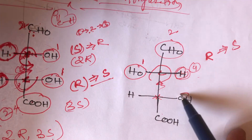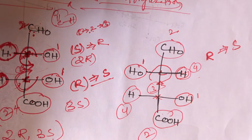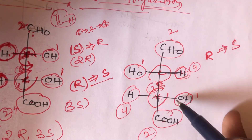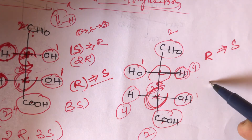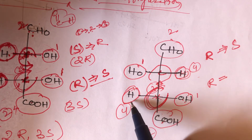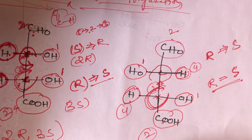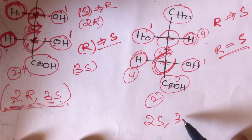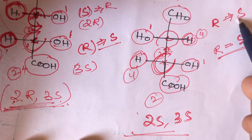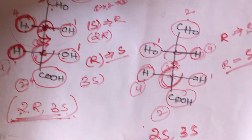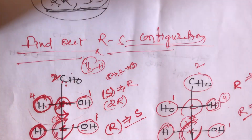For the third carbon in the second example: first priority goes to OH, second priority goes to COOH, third priority goes to the top position, and fourth priority goes to hydrogen. The direction is also clockwise, meaning R configuration. But here again the least priority group hydrogen is present on the horizontal line, so R configuration becomes S. Therefore both carbons are S, giving a total configuration of 2S, 3S. The simple trick is: if the least priority group is on the horizontal line, R becomes S and S becomes R.